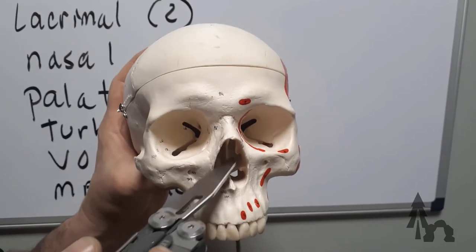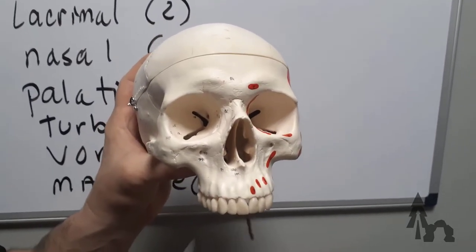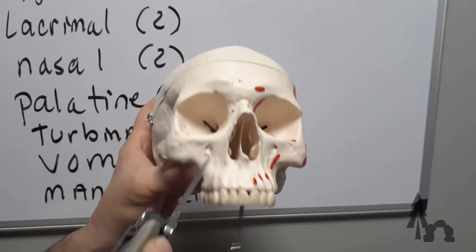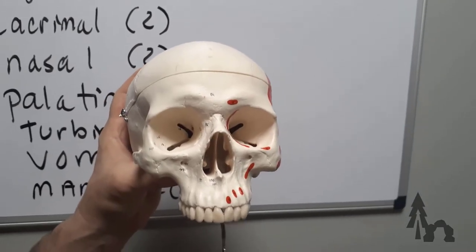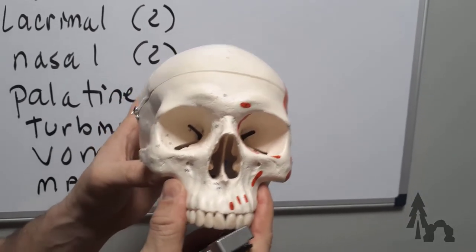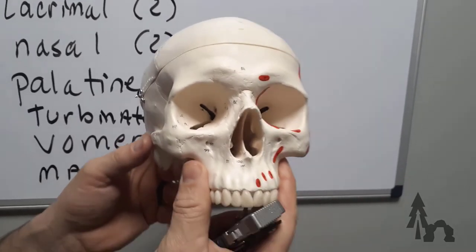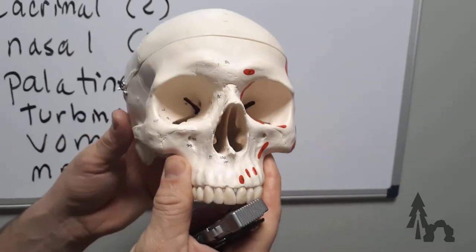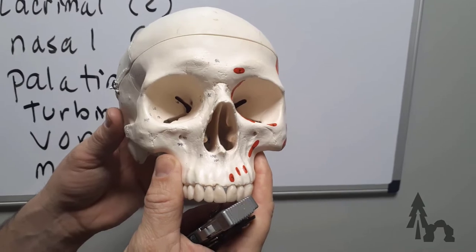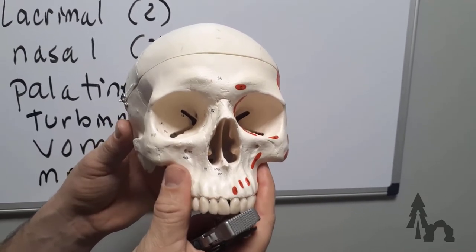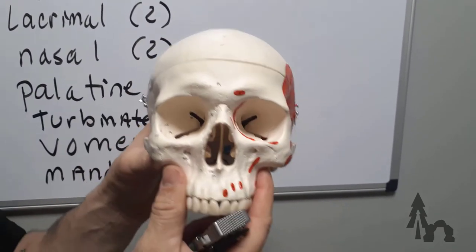And then you'll see a large bone that runs right up the center and articulates with that perpendicular plate of the ethmoid. That's called the vomer bone. Vomer rhymes with gomer, looks like a plow, and that's kind of where it came from. Vomer, same root as vomit, because the plow would throw up the earth. So that's the vomer bone.